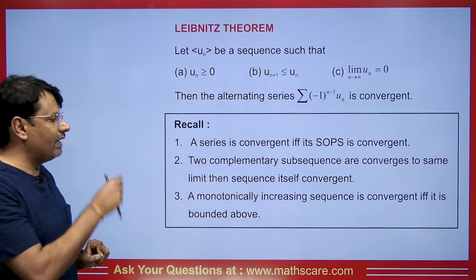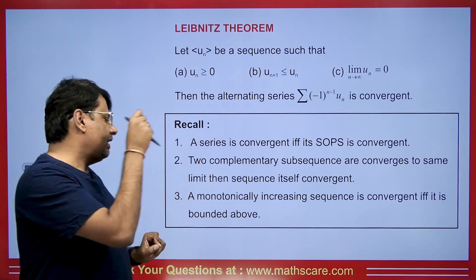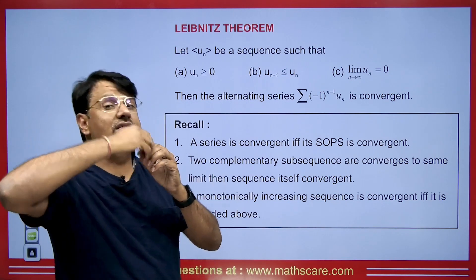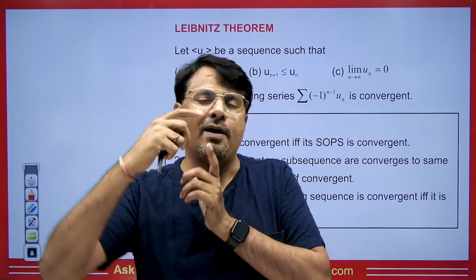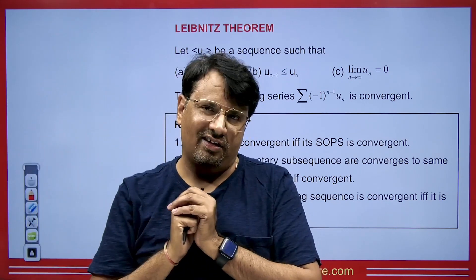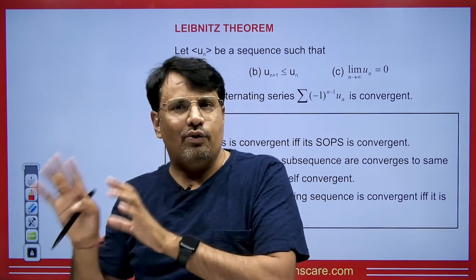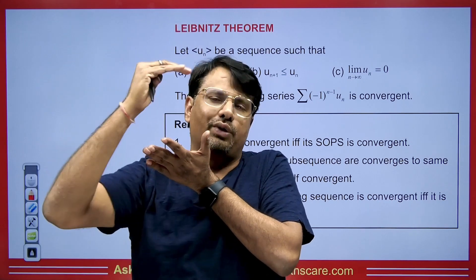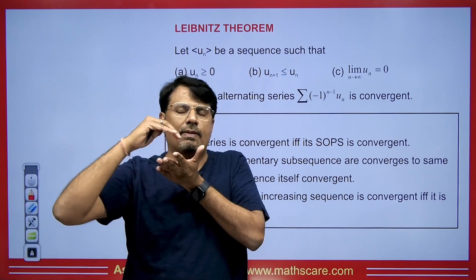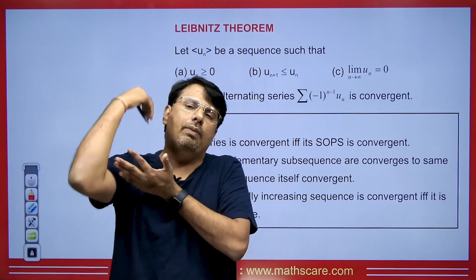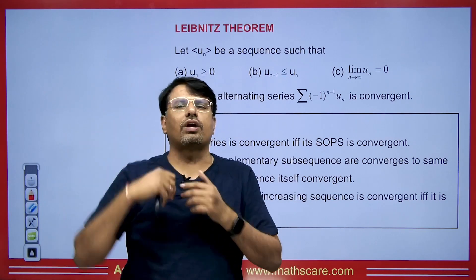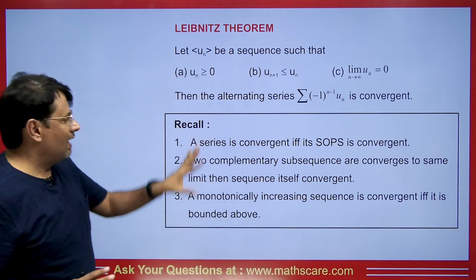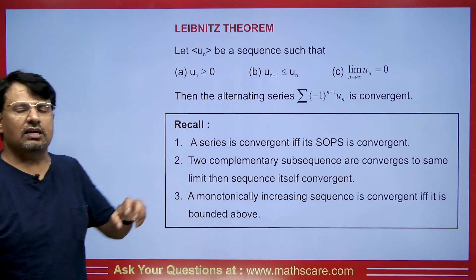If we have a sequence that is continually increasing but is not bounded above, then the sequence will not converge — it will diverge and go to infinity. Therefore, it must be bounded above. If we have an increasing sequence and it is bounded above, it will converge. These three points will be essential and will be used in the proof.